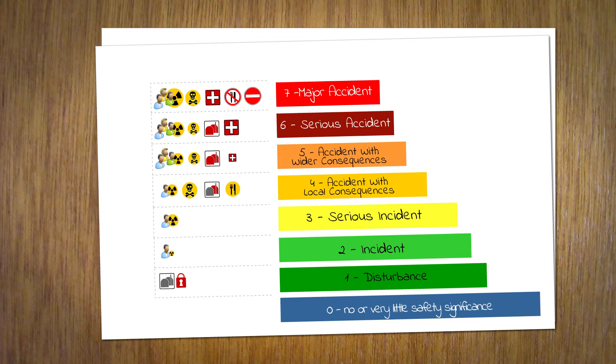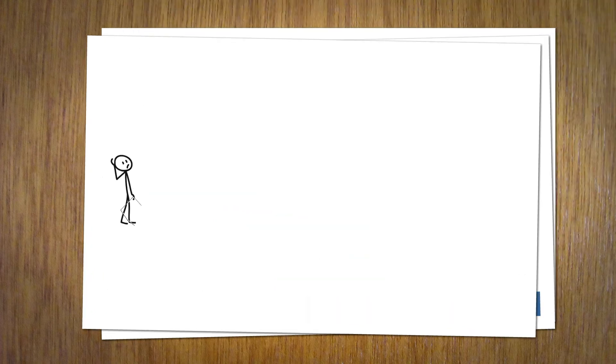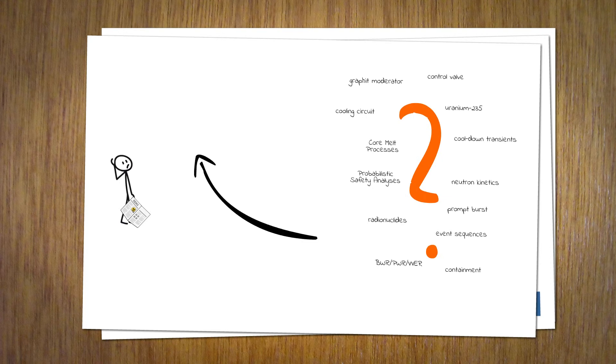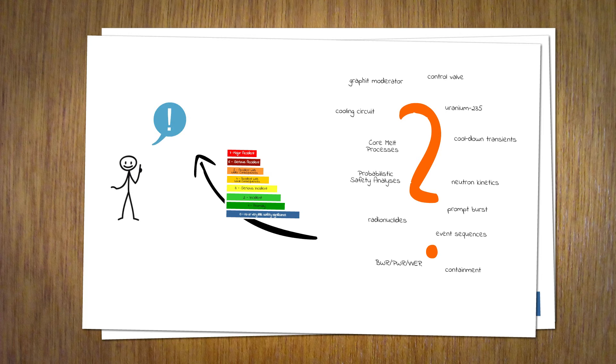Klaus reads his newspaper now more attentive to the INES level of events. He can understand the news reports better and can assess the risk of events for people and the environment more easily.